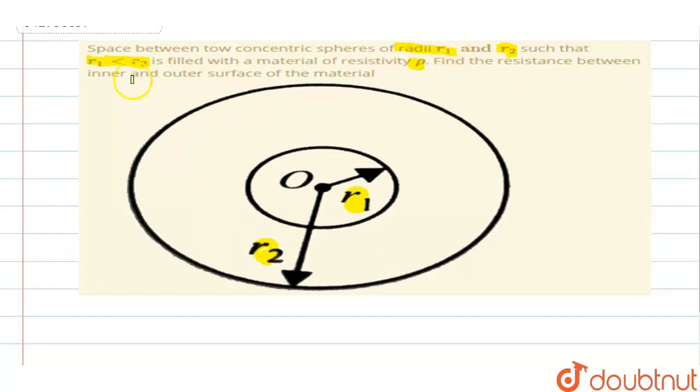Find the resistance between inner and outer surface of the material. So you have to find the resistance of outer and inner surface. Now, one condition they have given is R1 is less than R2, and the resistivity is given to be rho.